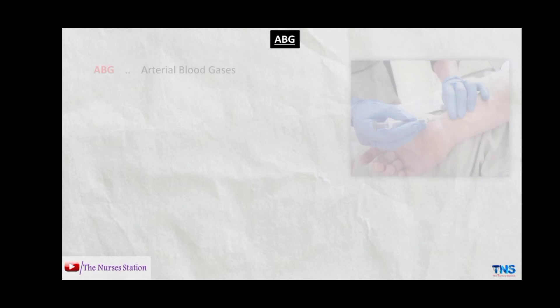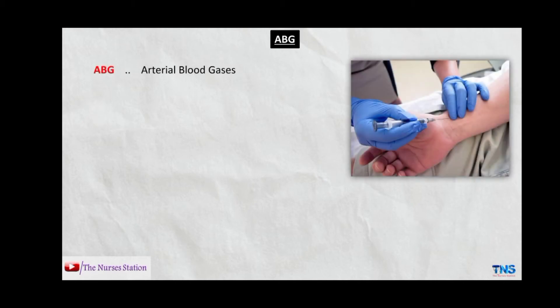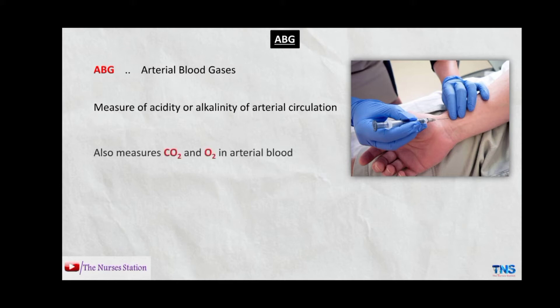Before we get into the interpretation of ABG, we will first see what is ABG. ABG stands for arterial blood gases. It is a test to measure the acidity or alkalinity of your arterial circulation, and it also measures carbon dioxide and oxygen in the arterial blood.